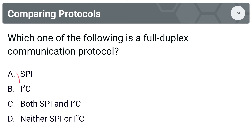The answer is SPI. Remember, I2C is a half-duplex protocol — the controllers and peripherals share one data line. Whereas SPI has a dedicated line for the controller to output to the peripheral and a dedicated line for the peripheral to output to the controller.